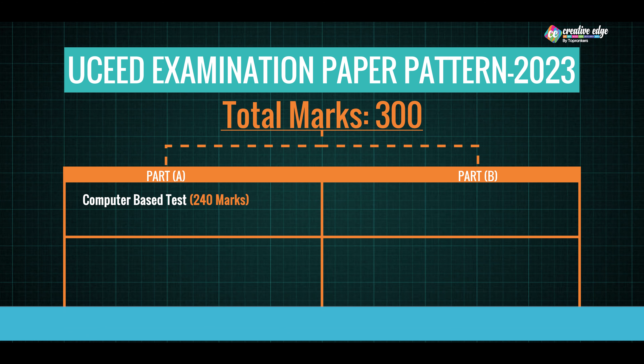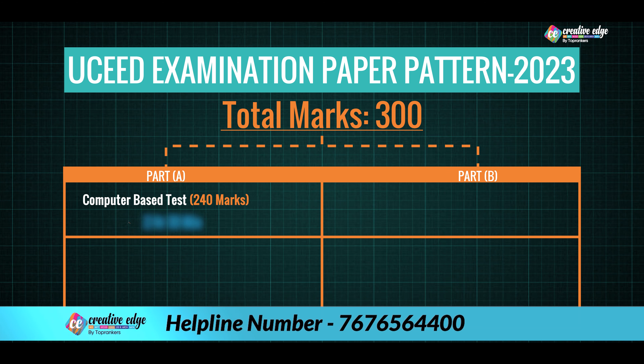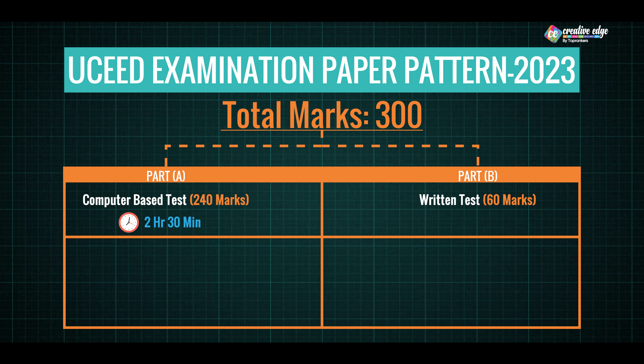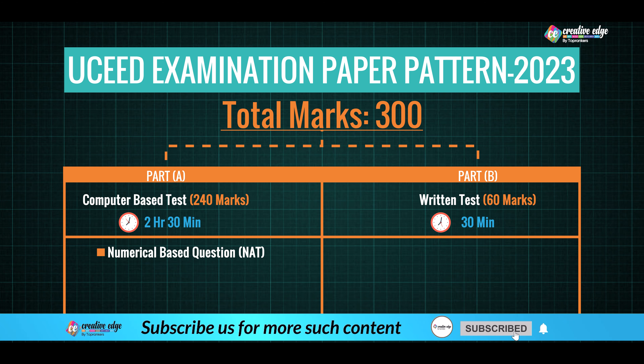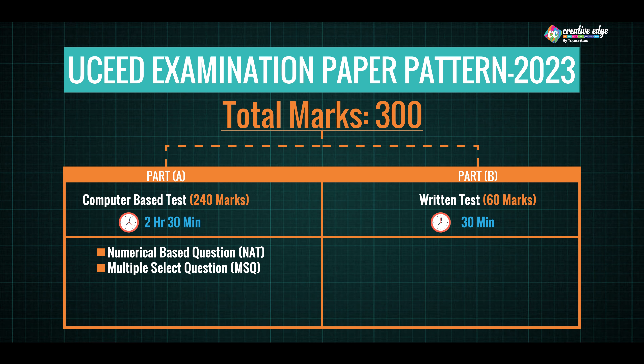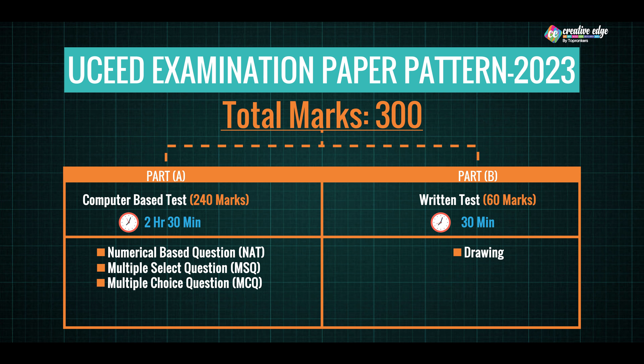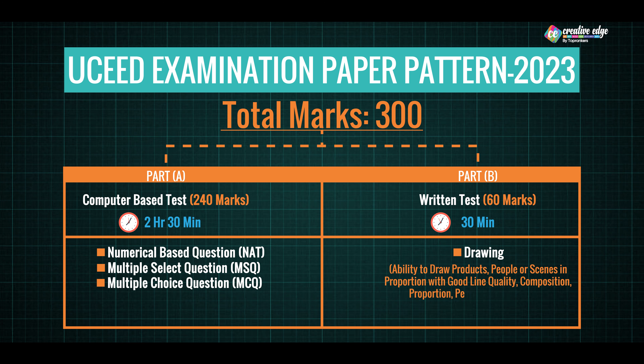Now let's look at the paper pattern. Let's first discuss the previous year 2023 paper pattern to get a better understanding of the changes that have been made. UCEED is a standard examination consisting of one single paper of 300 marks, divided into two parts — Part A and Part B. Part A is a computer-based test of 240 marks conducted for two and a half hours, divided into three sections: Section 1 is Numerical Ability, Section 2 is Multiple Select Questions, and Section 3 is Multiple Choice Questions. Part B is a pen-and-paper-based test of 60 marks covering drawing ability — products, people, or scenes in proportion with good line quality, composition, proportion, perspective, and shading.